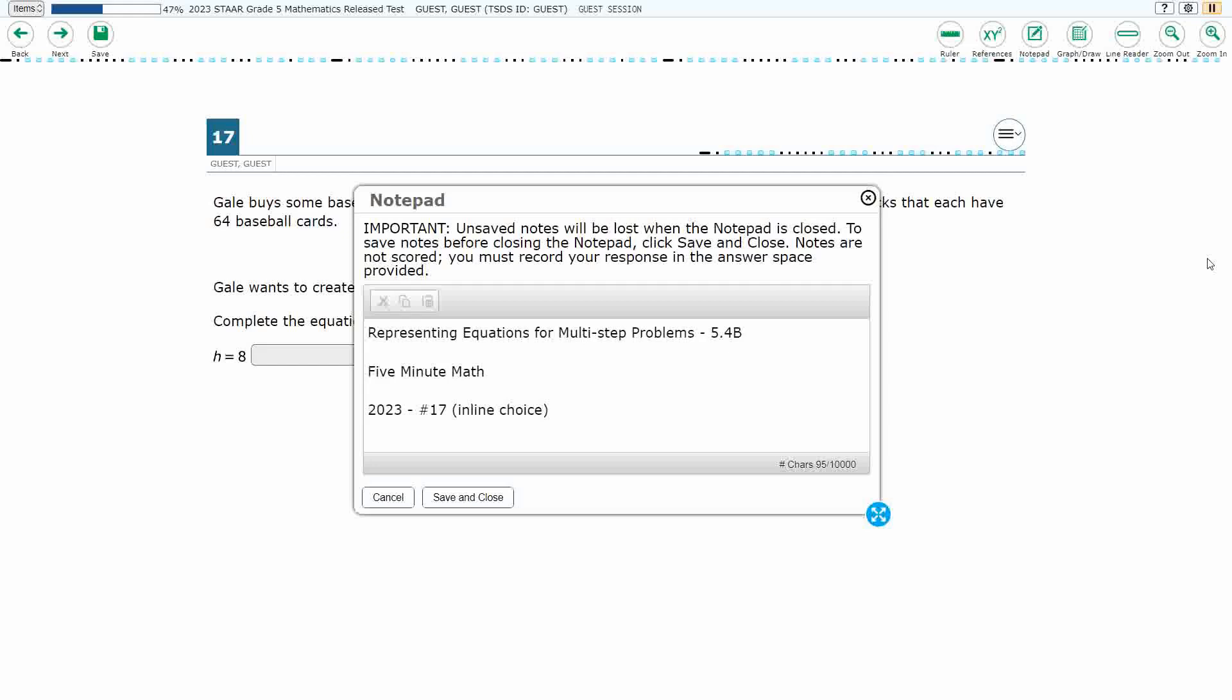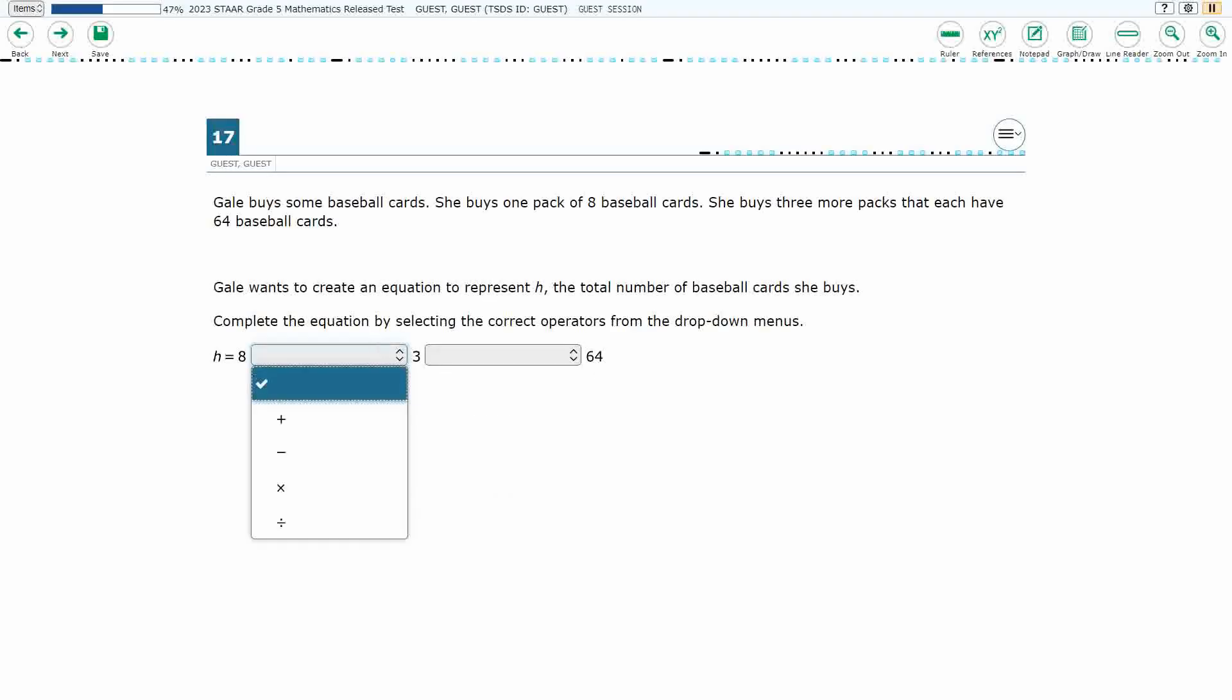Hello, and welcome to 5-Minute Math. Today we are looking at the 5th grade concept of representing equations for multi-step problems. This is standard 5.4b in the great state of Texas, and we are using item number 17, which is a new item type called inline choice of the 2023 released STAAR test.